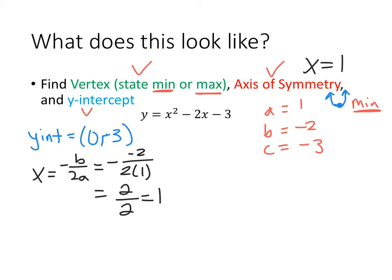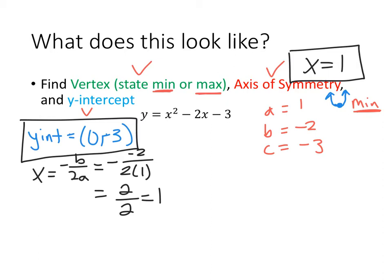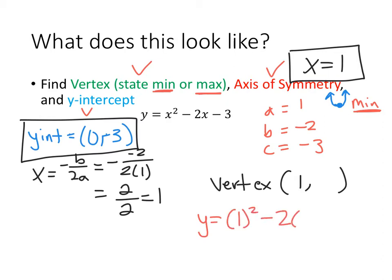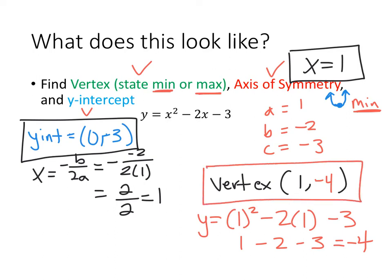Now I know the y-intercept is (0, -3) and the axis of symmetry is x = 1, so my vertex has an x-coordinate of 1. To find the y-coordinate, I plug x = 1 back into the equation: y = 1² - 2(1) - 3 = 1 - 2 - 3 = -4. So the y-coordinate of my vertex is -4, giving a vertex at (1, -4).